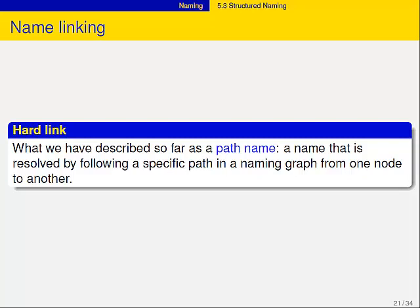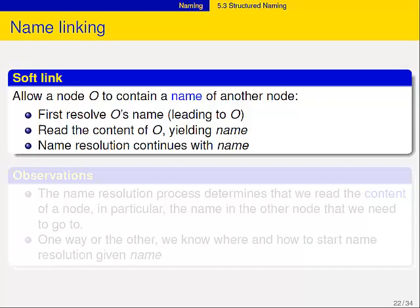This is a part that is always difficult to explain in terms of file systems, but when you talk in terms of namespaces, it's actually very simple. I just described a path name and how you resolve a path name. What we can talk about is linking.